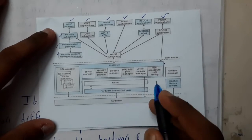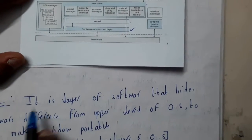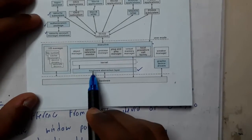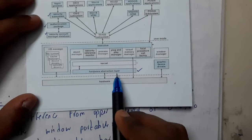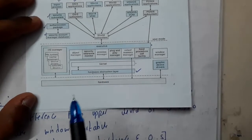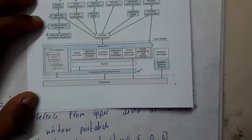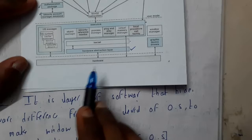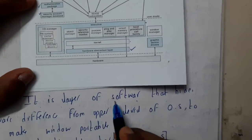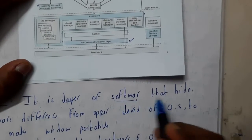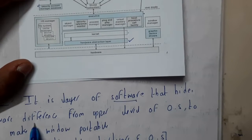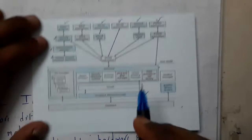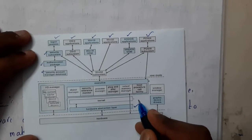Let us start with HAL, which stands for Hardware Abstraction Layer. It is a layer of software that hides the hardware differences from the upper layers of the OS to help make Windows portable. It is a medium between the hardware and the kernel.